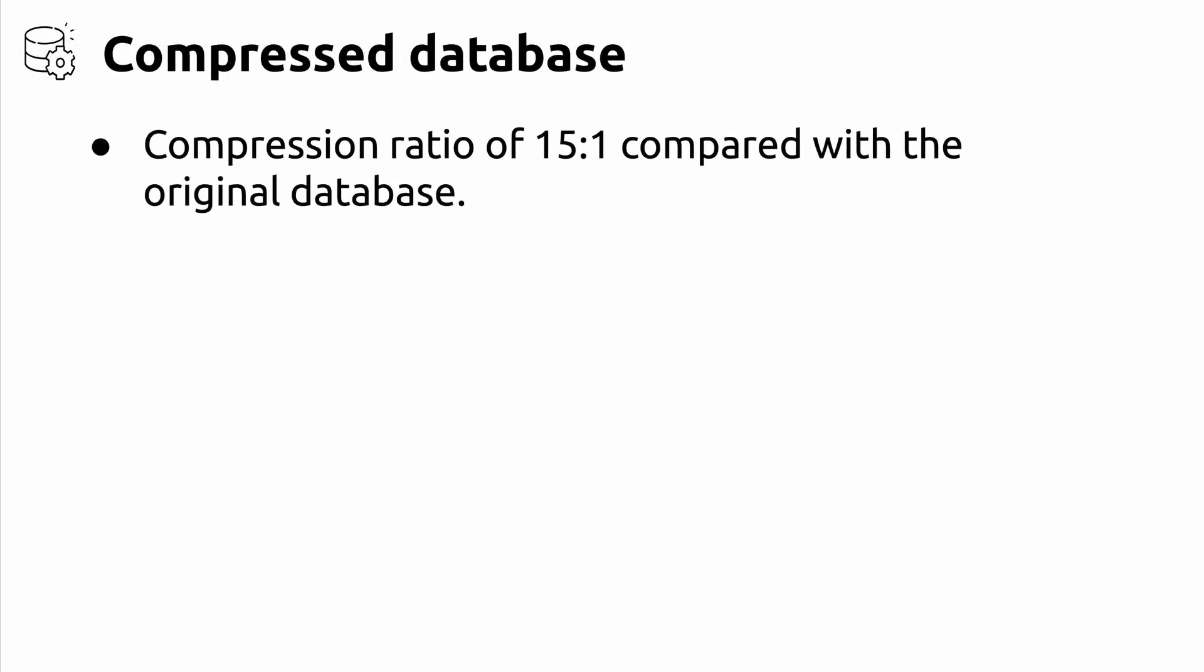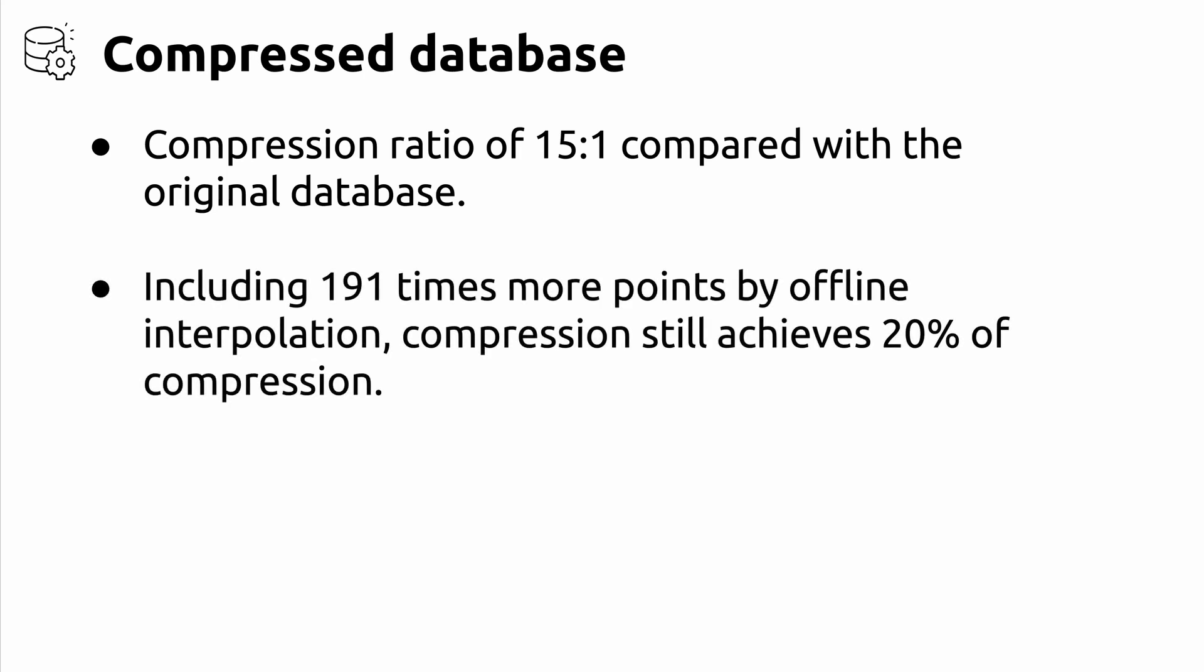With this method, we achieve a compression ratio of 15 to 1 compared with the original size of the database. Including 191 times more locations found by the offline interpolation, we still achieve 20% of the compression related to the original size of the database.